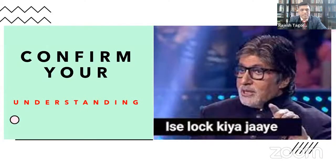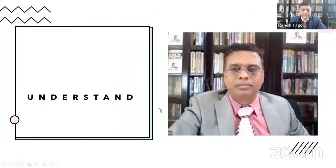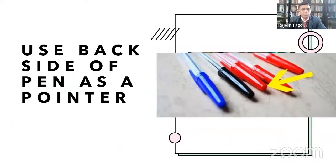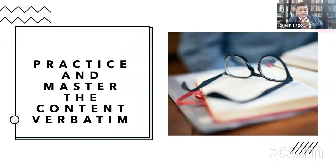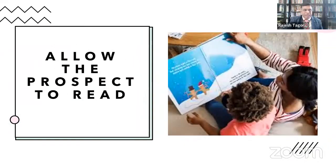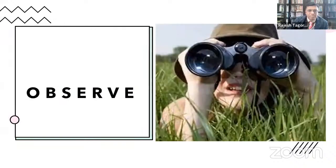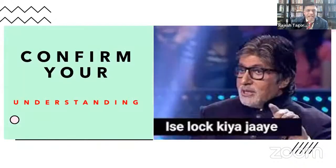These are the nine rules of Wealth Kit presentation: number one, always carry the full kit; number two, use pen as a pointer; number three, practice and master the content verbatim; number four, allow the prospects to read; number five, demonstrate the presentation conceptually; number six, listen; number seven, observe; number eight, understand; and number nine, conform your understanding.